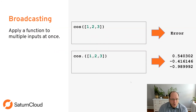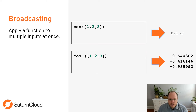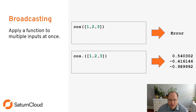The last cool feature in this section is broadcasting. If you give the cosine function a vector, it'll error because it doesn't know what to do with a vector as input. However, if you put a dot between the function name and the parentheses — cos.(vector) — it applies the cosine function to each piece of the vector, giving you a vector as output. This is really cool for applying functions that weren't originally designed for vectors or matrices.